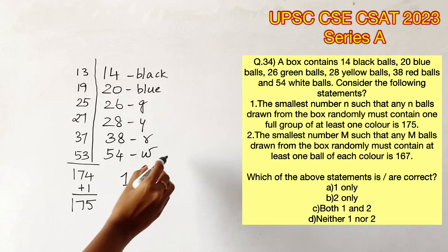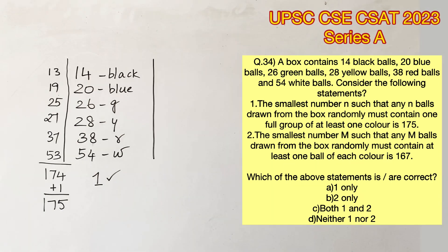Next statement says the smallest number M such that any M balls drawn from the box randomly must contain at least one ball of each color is 167. This is the same as the first statement—it contains the word 'must,' which means we have to find the smallest number from which it will be definitely true.